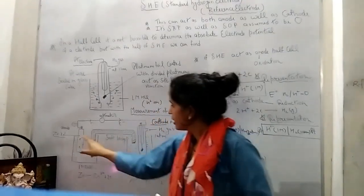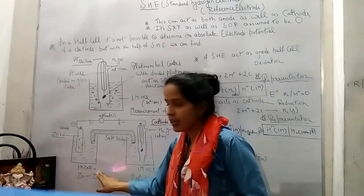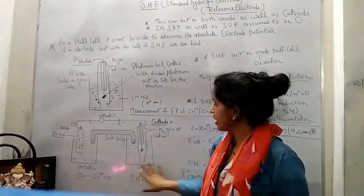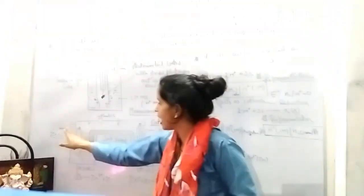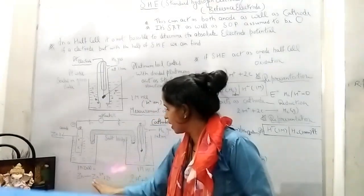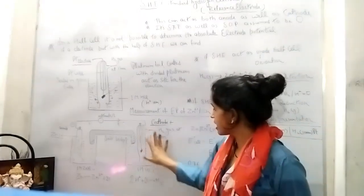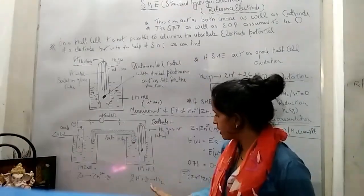Here I have taken two containers. The electrode is zinc rod dipped in one molarity of zinc sulfate electrolyte. Here I have taken SHE. And you know that at anode, oxidation occurs: Zn loses its electrons to become Zn²+.